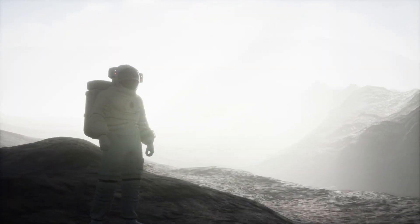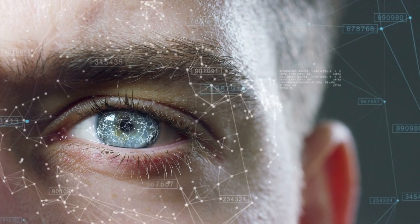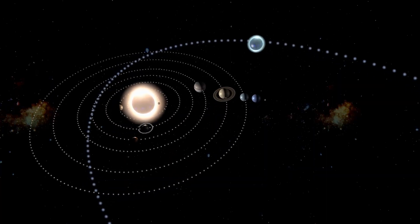For most of human history, we believed that our world was the only one out there. But with the birth of philosophy and science, we discovered that our planet is just one of eight orbiting the sun.